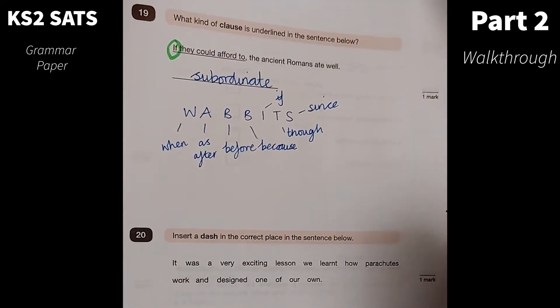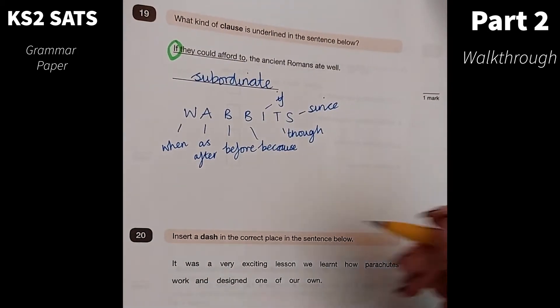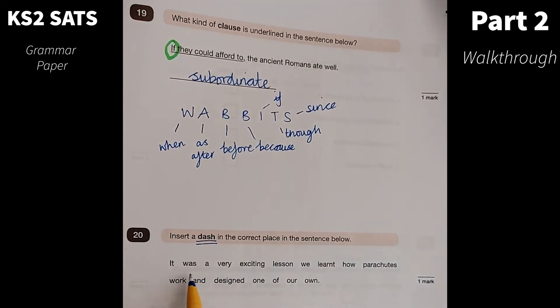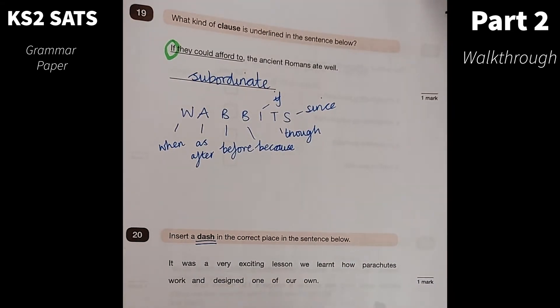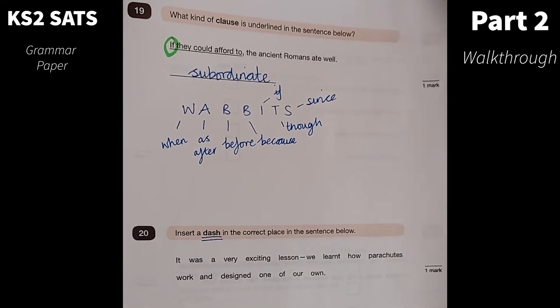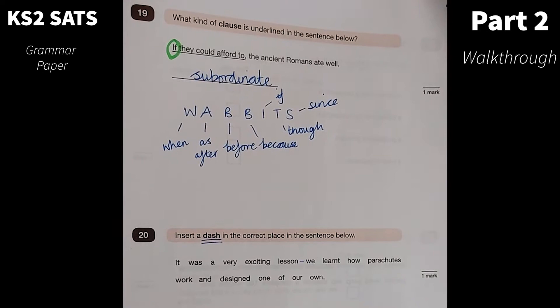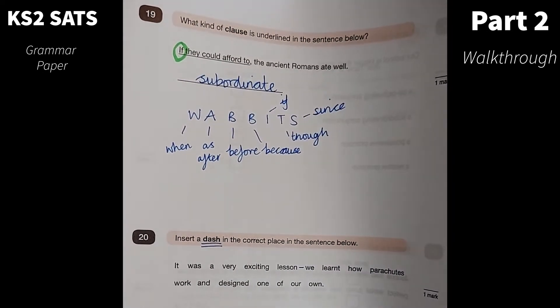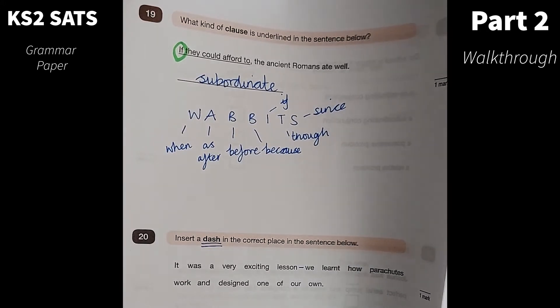Number 20. Insert a dash in the correct place in the sentence below. We should know that dashes are used to add extra information, to add parentheses. So it was a very exciting lesson. We learned how parachutes work and designed one of our own. I'm looking for a place where additional information has been given and my dash would go here after lesson. It's giving us a bit more about why it was a very exciting lesson.